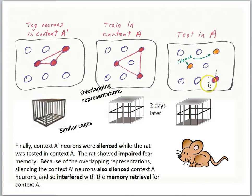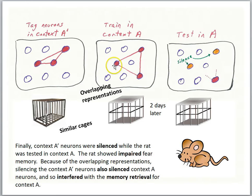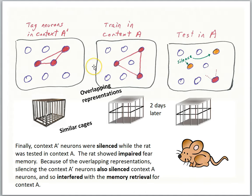Consider the testing situation: we're testing in context A, which should be activating the engram for context A. But at the same time, they were silencing the A' neurons. Two of those cells are also shared in the context A' memory, so by silencing the A' neurons, they were interfering with the reactivation of the fear memory for context A. This shows that very similar contexts have an overlapping neural representation. The hippocampus is good at pattern separation, so there are some unique patterns of cell activity for these very similar representations, but if you can silence enough of a memory representation, you can interfere with retrieval of that memory.